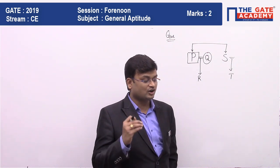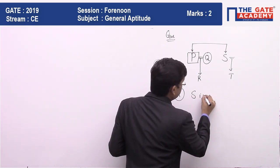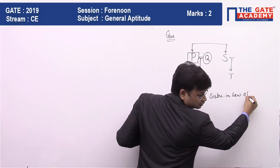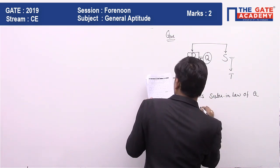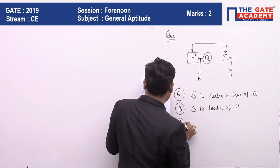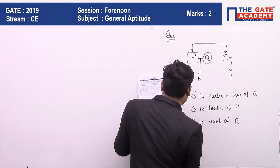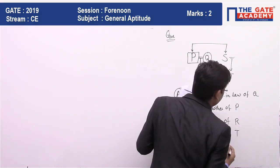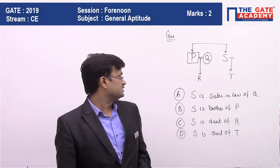Now the question is: which of the following statements is definitely false? The statements are: Statement 1 — S is sister-in-law of Q; Statement 2 — S is brother of P; Statement 3 — S is aunt of R; Statement 4 — S is aunt of T.